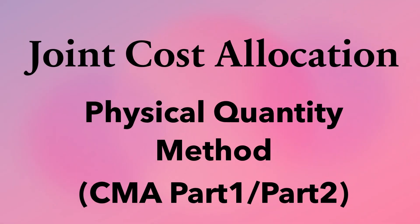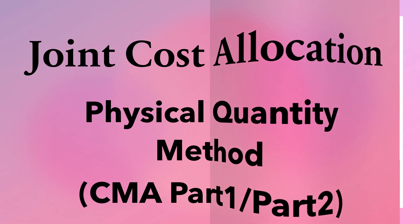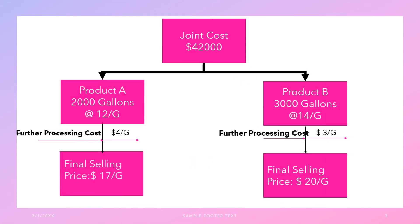Hi guys, in this video I'm going to explain joint cost allocation — the physical quantity or physical unit method. I'm going to take an example where a joint process has taken place and at the split-off point, where the different products from that single joint process are separated and become separately identifiable. At this point we have two products, product A and product B, produced out of a single process for which a joint cost of $42,000 has been allocated.